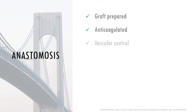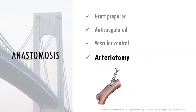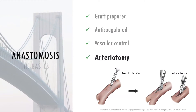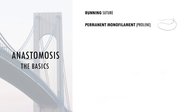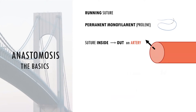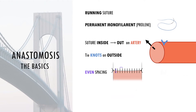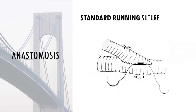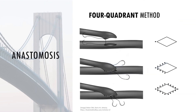Once the graft is prepared and the patient is anticoagulated, the vascular clamps and vessel loops are applied to occlude blood flow to the area of the anastomosis. An arteriotomy — a cut in the artery wall — is created with an 11 blade with care not to puncture the back wall, then extended to the desired length using angled scissors. The anastomosis is usually sutured in a running fashion using a permanent monofilament suture like Prolene. The artery is always sutured from the inside out to avoid creating an intimal flap. Knots are always tied on the outside of the vessel and never within the lumen. A double-loaded suture — a suture with a needle on both ends — is used.